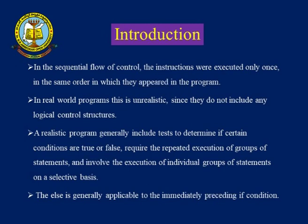As we have already seen in the program design step, there are some sequential steps to execute or solve a particular task. These sequential steps should not always be executed in a sequential manner. Executing these steps is nothing but a flow — the flow of steps. There needs to be some control in order to solve a particular task. There are many flow of control constructs in the C programming language. These instructions were either executed only once or in the sequential order in which they appeared in the program. In a real-world program, this is most unrealistic since it does not include any logical control structures.